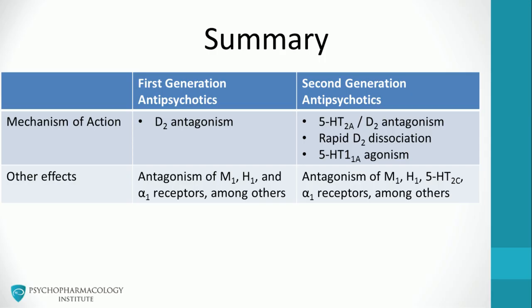This table summarizes the core concepts on the mechanism of action of first and second generation antipsychotics. Conventional agents are D2 antagonists, while second generation antipsychotics have a high 5HT2A to D2 ratio — meaning they block 5HT2A receptors more potently than D2 receptors. They also show rapid dissociation from D2 receptors. Some agents, such as quetiapine, ziprasidone, and clozapine, have 5HT1A agonism. Depending on each individual agent, both first and second generation antipsychotics can also block muscarinic-1, histamine-1, and alpha-1 receptors, among others.